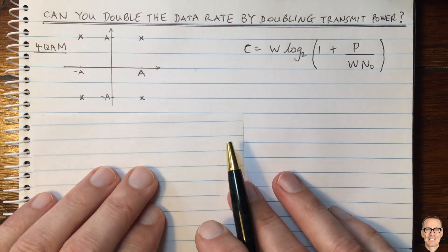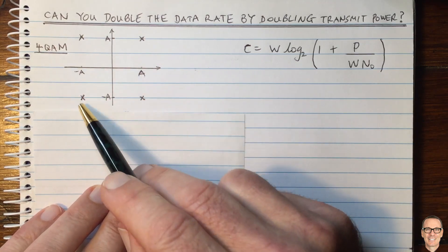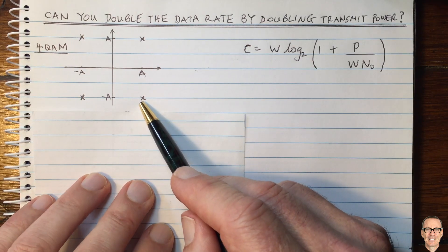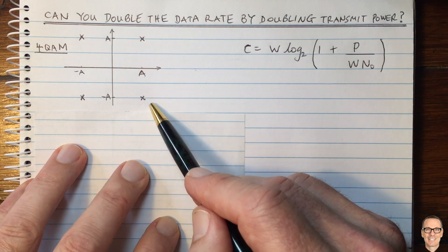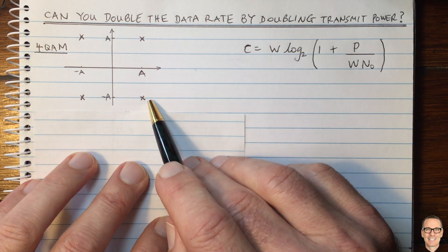Let's try to understand that with an example. Well here we've got four QAM, there are four constellation points, and if you want to know more about a constellation diagram, check the description below.